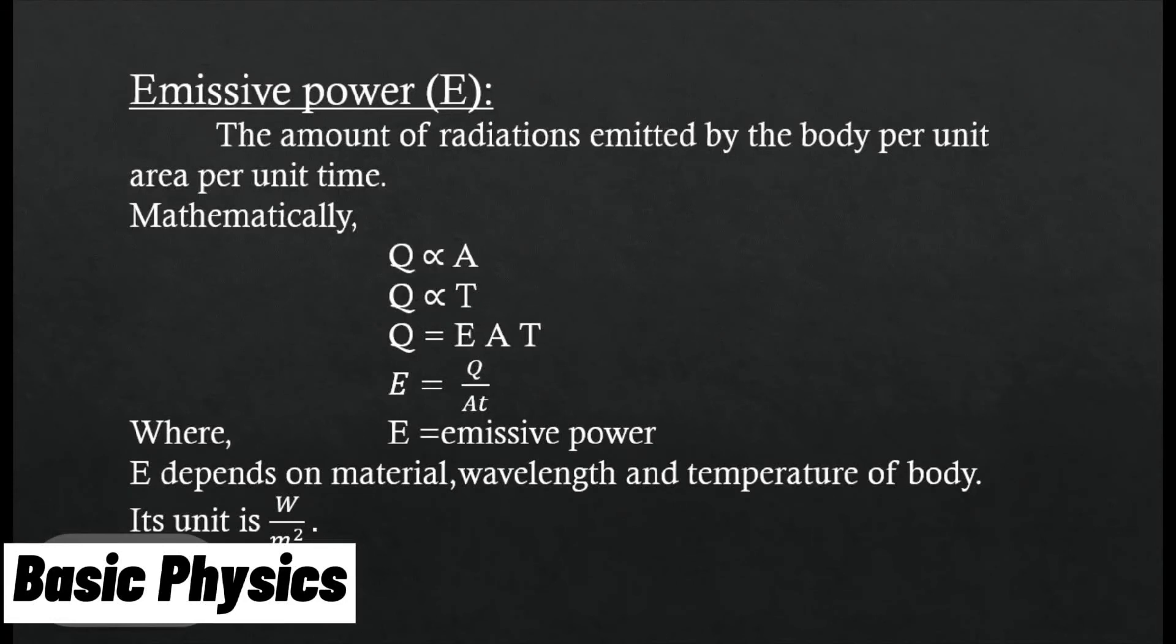Where E is the constant of proportionality called emissive power. It depends on material, wavelength, and temperature of body. Its unit is watt per meter square.